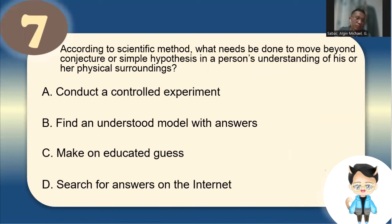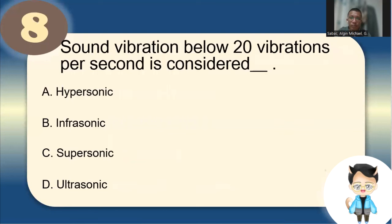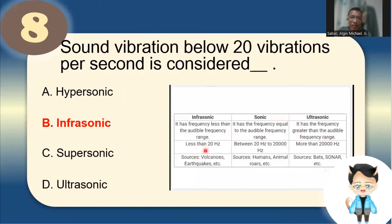Number 7: According to the scientific method, what needs to be done beyond conjecture or simple hypothesis? The answer is letter A: conduct a controlled experiment. Number 8: Sound vibration below 20 vibrations per second is considered infrasonic. Below 20 Hz = infrasonic; above 20,000 Hz = ultrasonic.